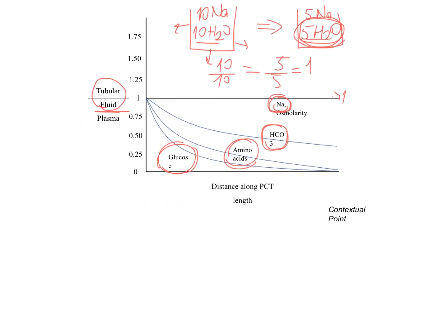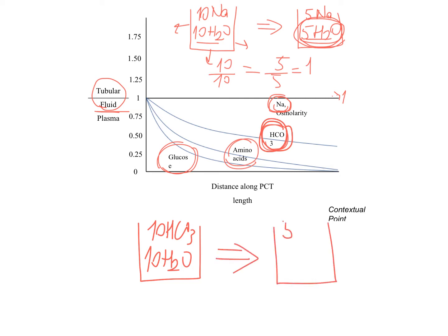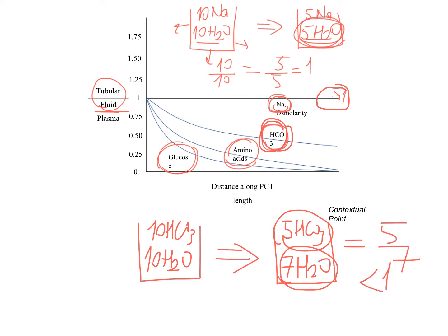Now you should understand why we draw bicarb, amino acids, and glucose below one. Let's give an example with bicarb: we have 10 bicarb and 10 water. But at equilibrium, we have 1 bicarb but 7 water. So we reabsorbed bicarb more than water. The ratio becomes something like 5 divided by 7, which is below one. So we are reabsorbing bicarb faster than water, and that is why the tubular fluid concentration of bicarb relative to plasma is below one.